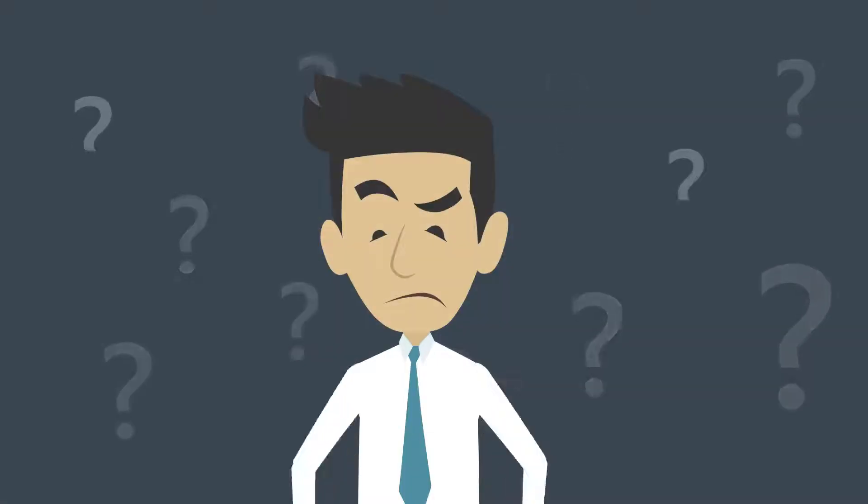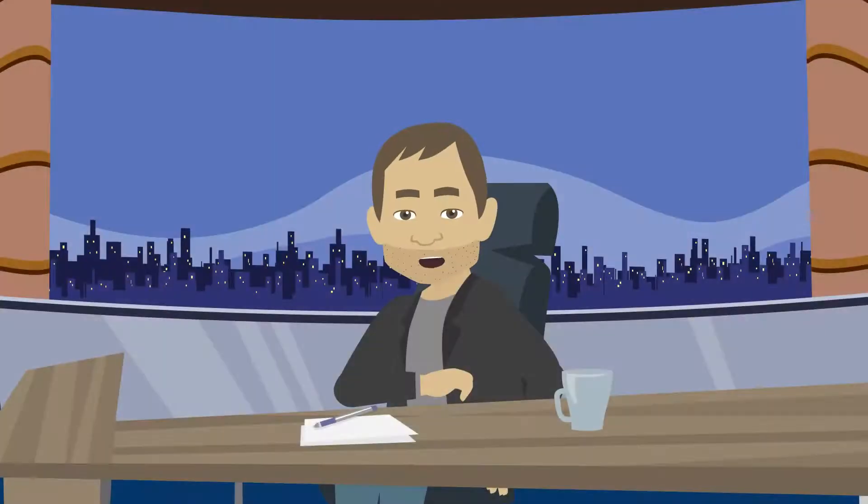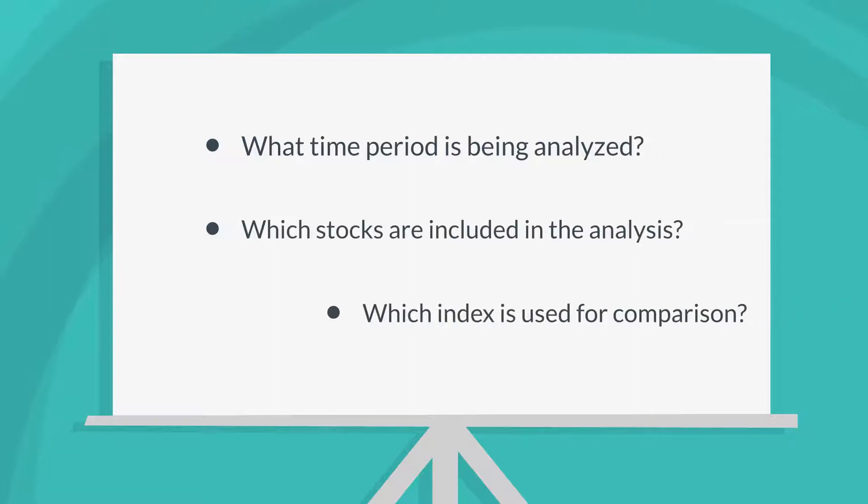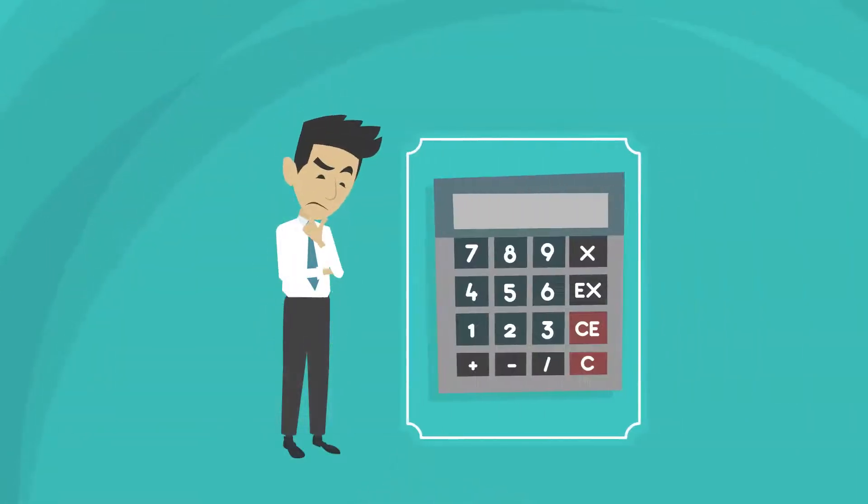Unfortunately, calculating beta isn't as easy as just plugging numbers into a formula and getting an answer. There are some things you need to consider before doing so, like what time period is being analyzed, which stocks are included in the analysis, and which index is used for comparison. Because of this complexity, most investors don't even bother trying to calculate their own betas because they think it will be too complicated or take too much effort.